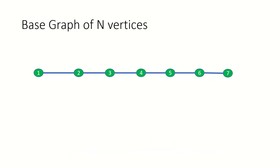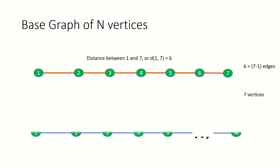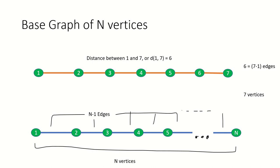Let's begin. How about our base graph? What is the distance between the first and last vertex of our base graph? Well in this case it's just the number of edges in the graph which is one less than the number of vertices. In general this is the number of edges in the graph and can be represented visually like this. Therefore for our base graph of size n the first-last distance is going to be n minus 1.